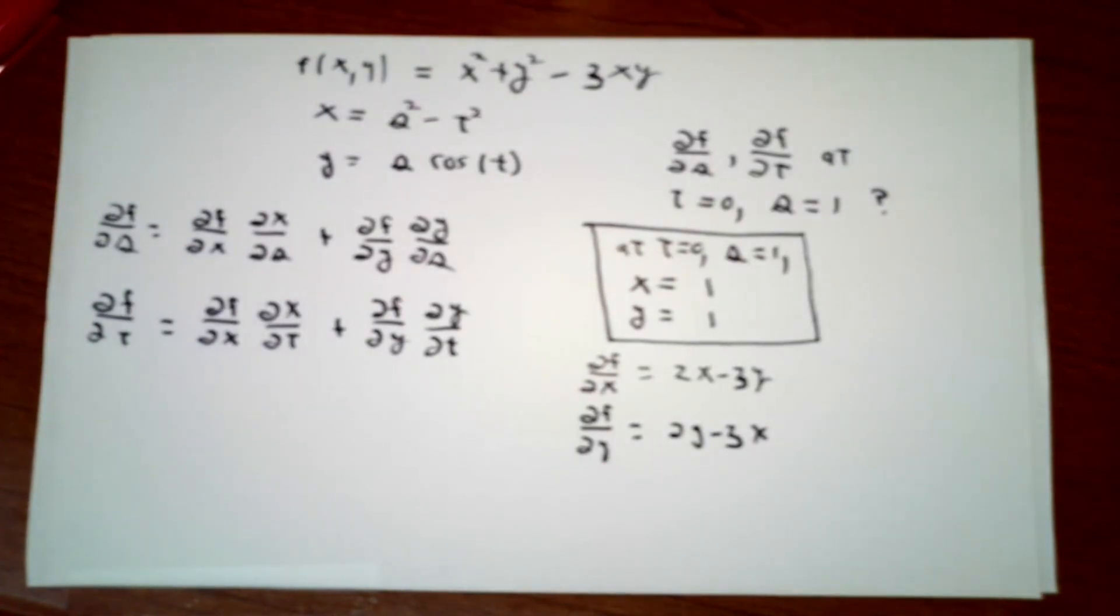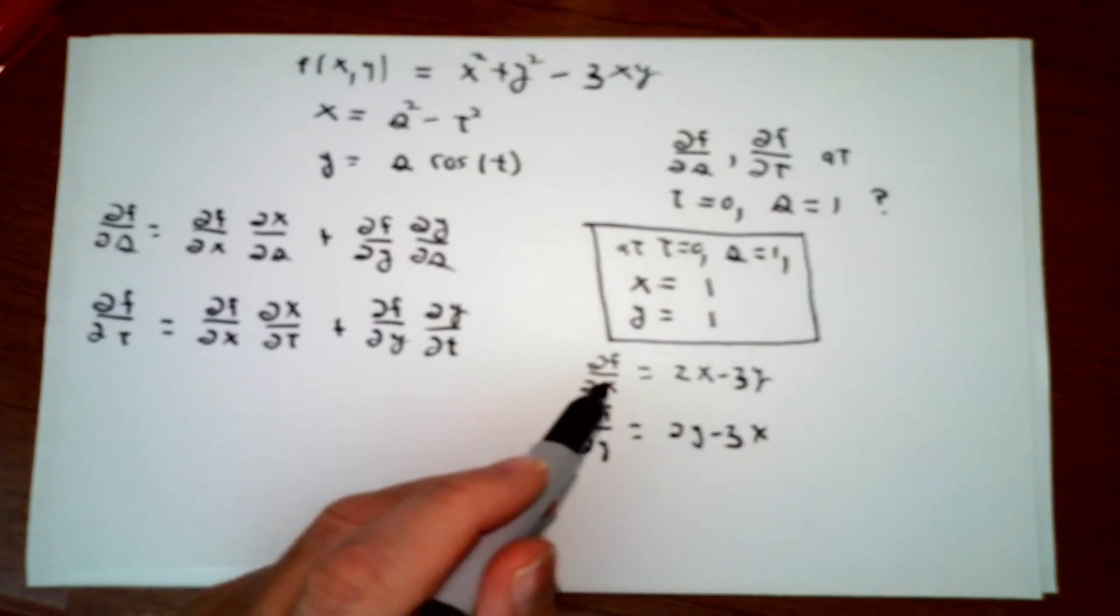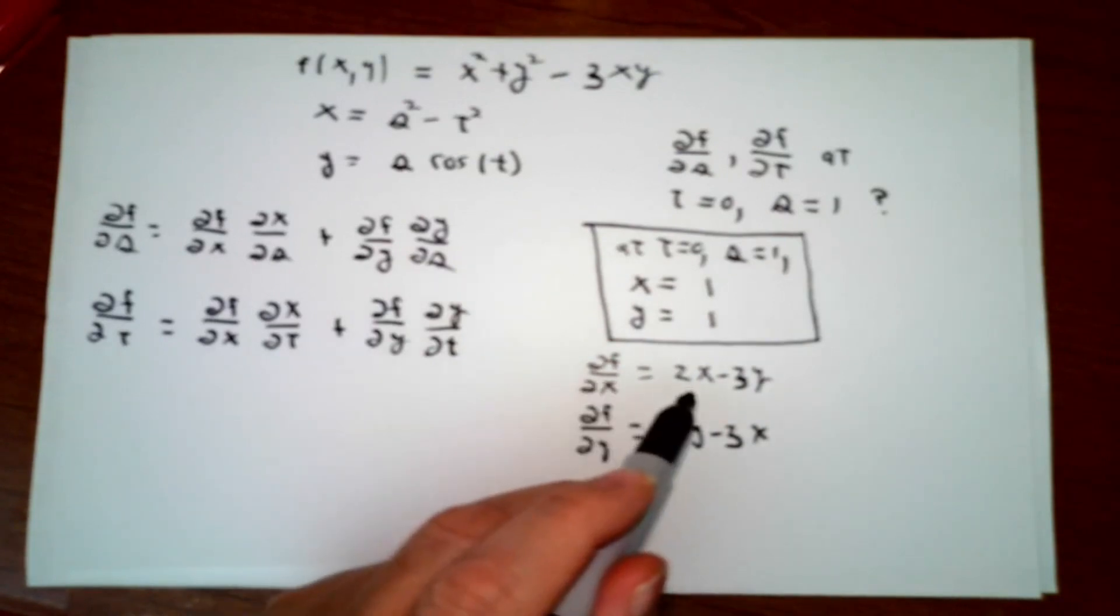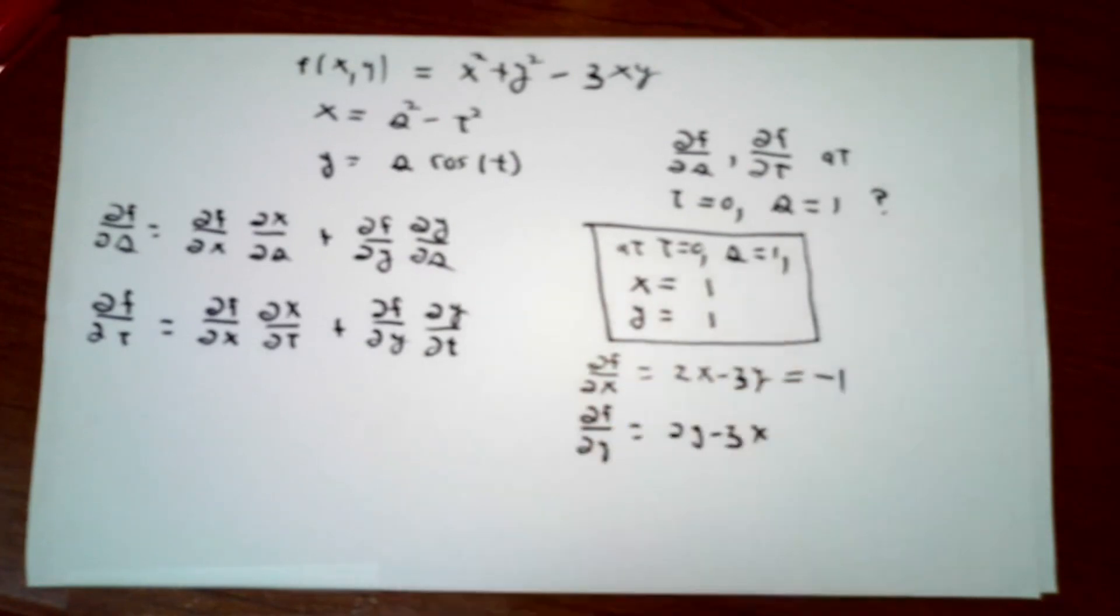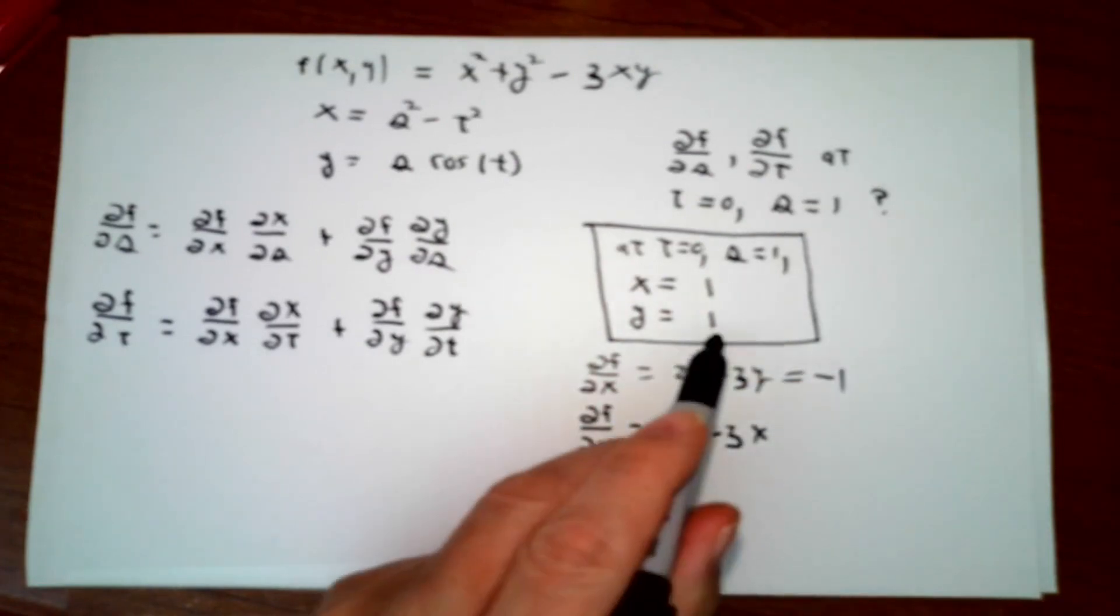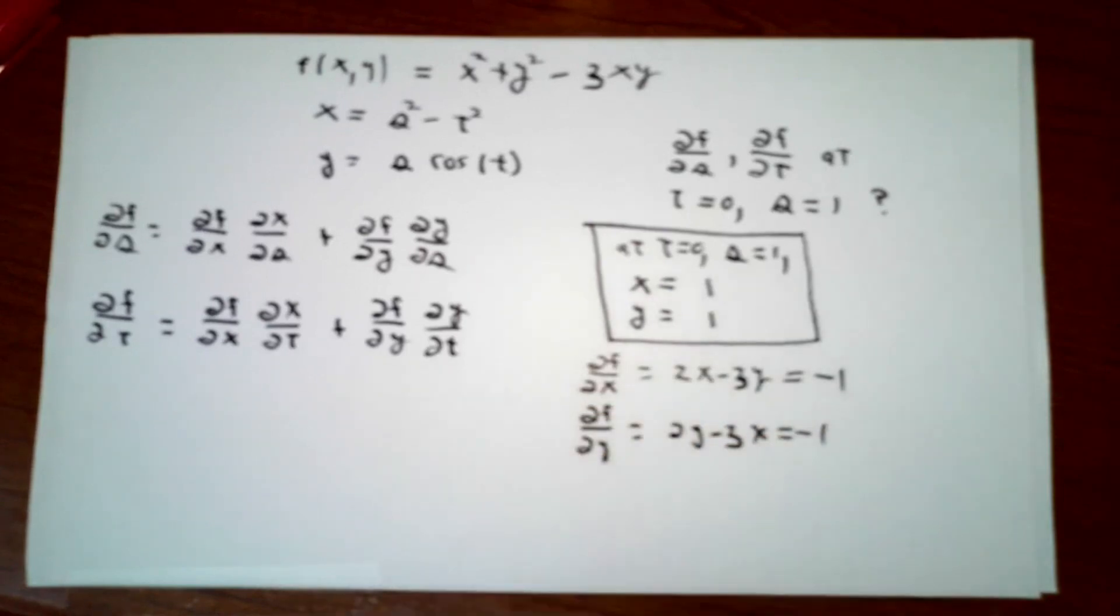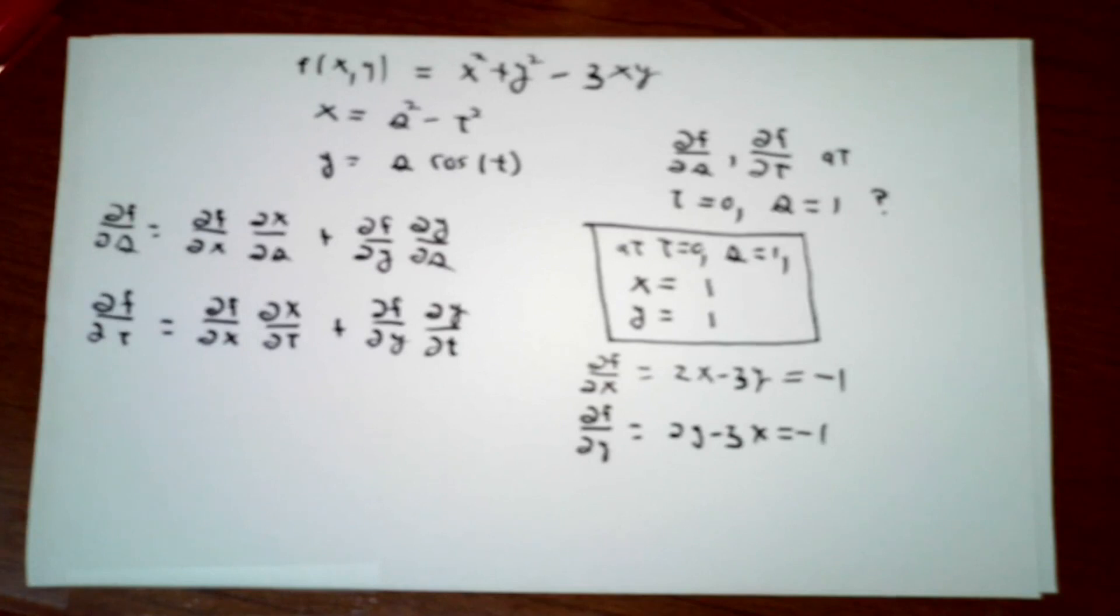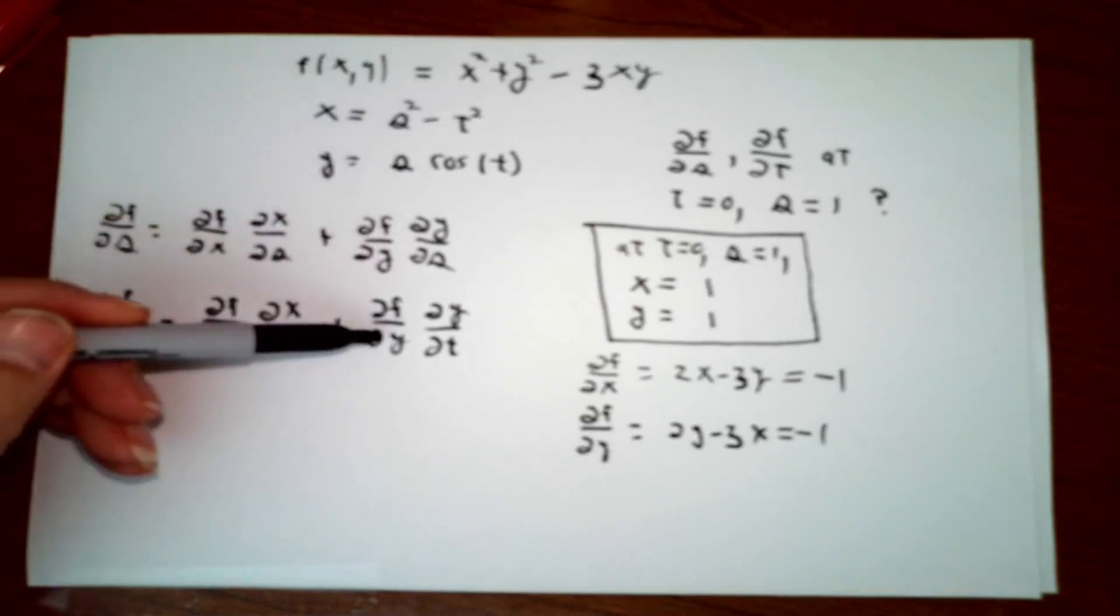Having fixed that, at the place where x is 1 and y is 1, partial with respect to x will be 2 times 1 minus 3 times 1, which is negative 1. 2 times y minus 3 times x will also be negative 1. So we now know that number, that one, that one, and that one.